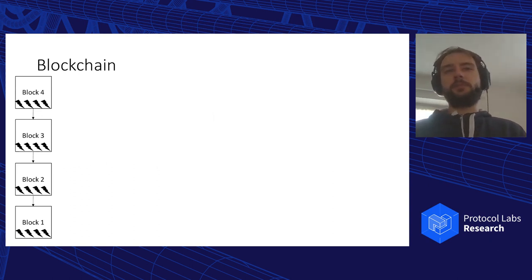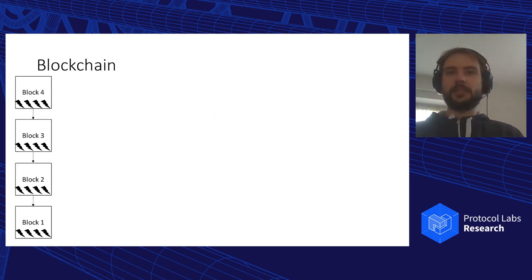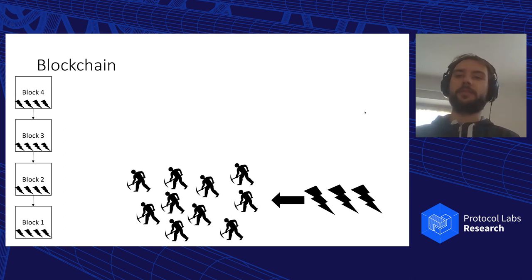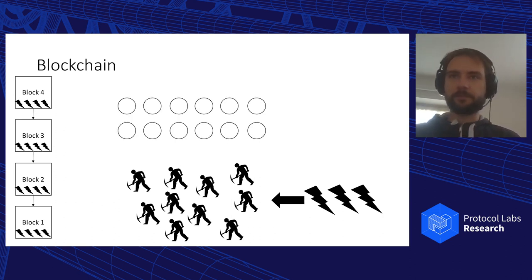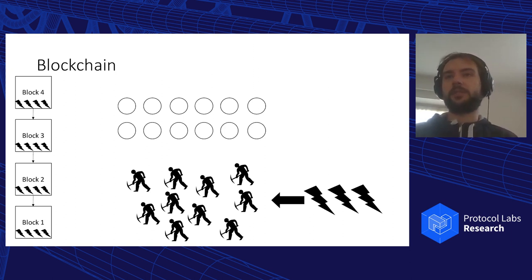As you probably know, blockchain is a chain of blocks. Inside those blocks we have transactions. The blockchain is maintained by miners who receive transactions from users, verify them, order them, pack them into blocks, and put them on top of the blockchain. With those transactions, we maintain some state — an initial state defined by the genesis block, and then every single transaction modifies the state.